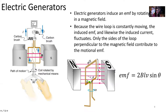Because the wire loop is constantly moving inside this magnetic field, the induced EMF and likewise the induced current is going to be fluctuating the whole time. Only the sides of our loop that are perpendicular to the magnetic field are going to contribute to the motional EMF generated by the generator. The parts of the loop that are parallel to the magnetic field will not contribute to the motional EMF.